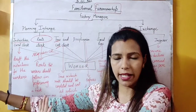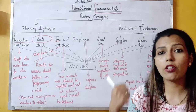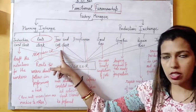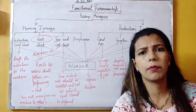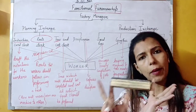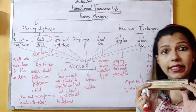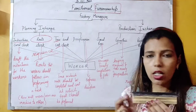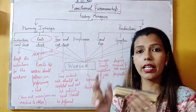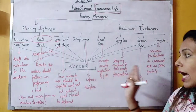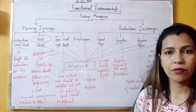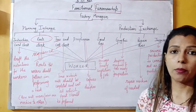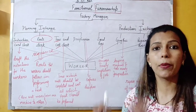Now moving to the production supervisors. First, the Speed Boss: the Time and Cost Clerk has already told workers the time — for example, make a duster in 20 minutes. The Speed Boss takes rounds and monitors to ensure that work is completed at the proper speed and within the allotted time. Their job is to ensure the timely completion of the job.